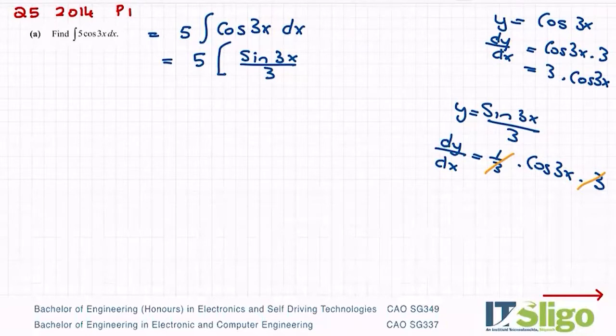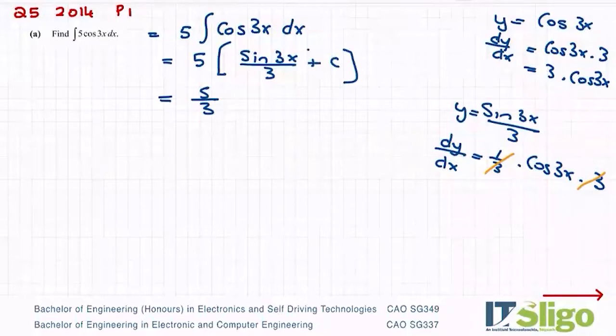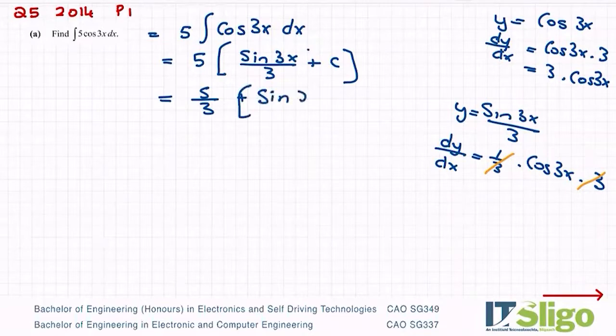And then we have to add on our constant of integration. And so we'll end up with 5 over 3 times sine 3x plus my c. So 5 over 3 sine 3x plus c is the answer to that one.